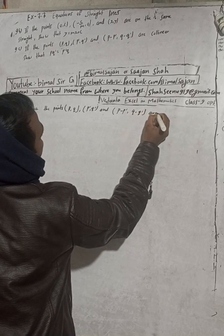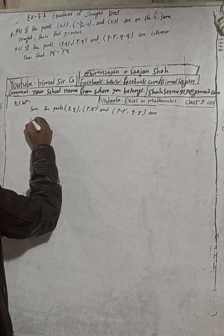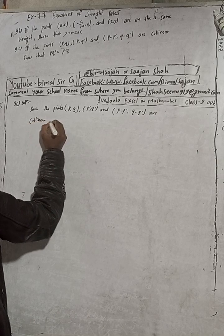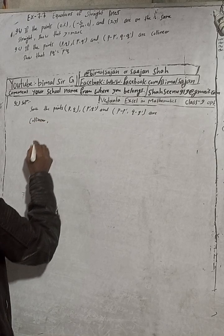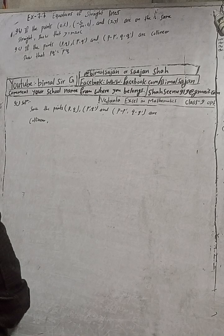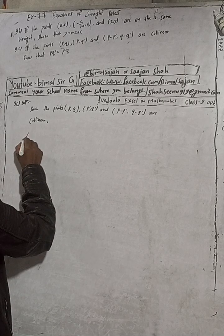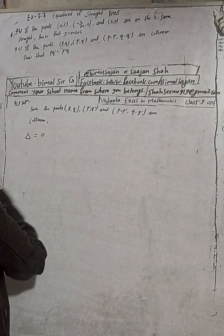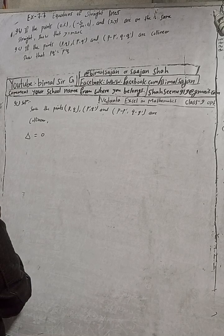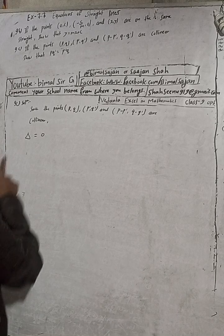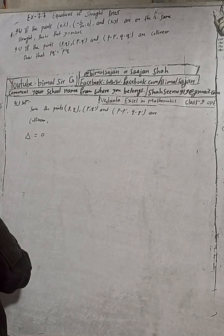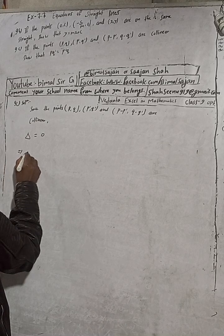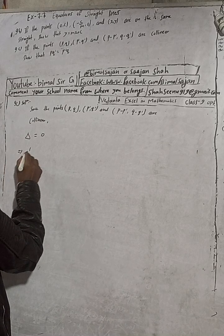Since the points are collinear, the area of the triangle is equal to zero. Delta is equal to zero. That means the area of the triangle equals zero, so delta equals zero. Delta for this case is one-half times the determinant expression.